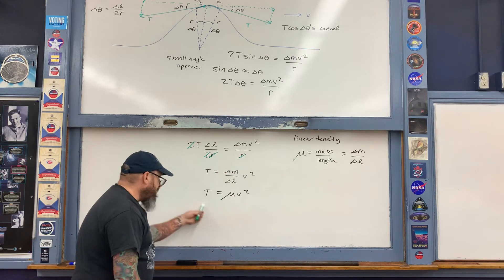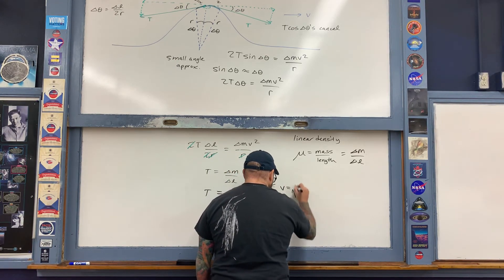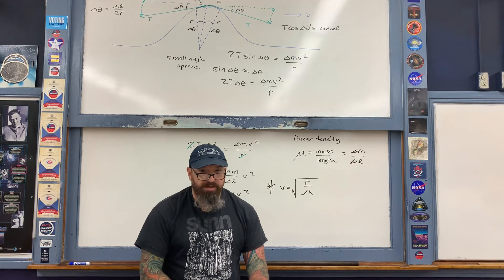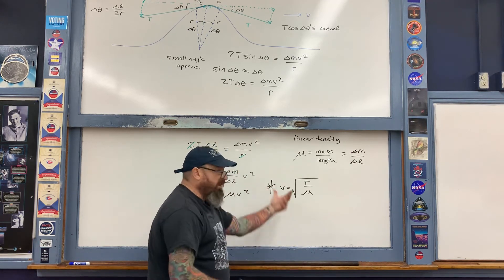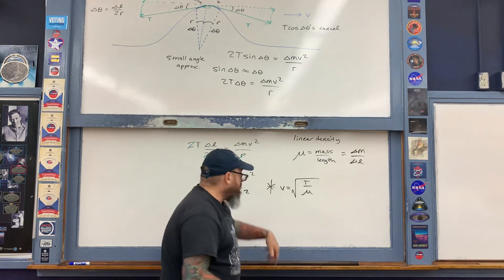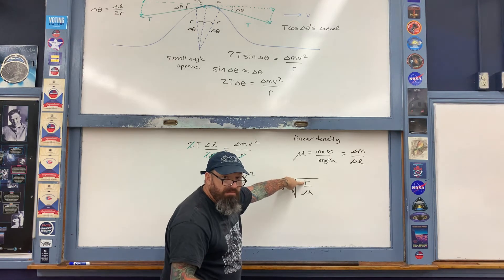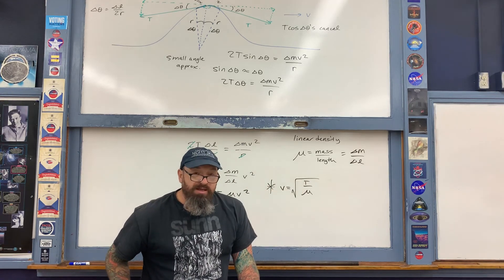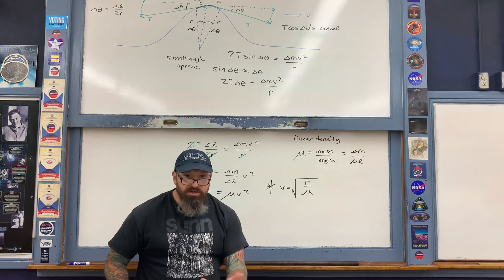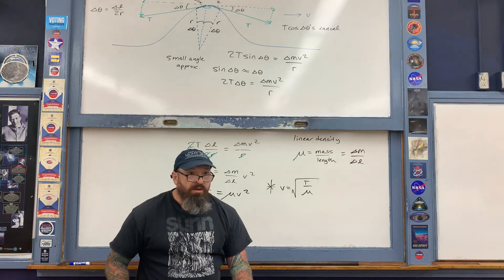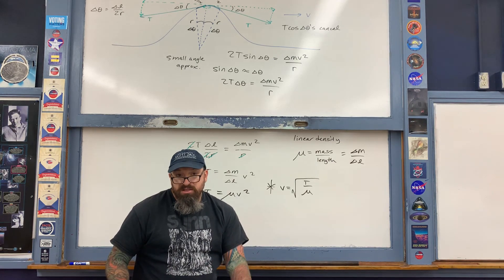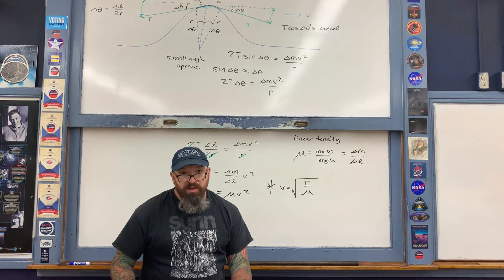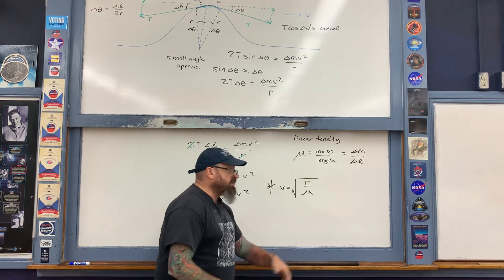Now just solve for the speed: divide by the linear density and take the square root. You end up with v equals the square root of T over mu. In general, when applying F equals ma to the propagation of a mechanical wave, you end up with an expression like this — the square root of something related to the rigidity of the medium (the applied force) divided by a property of the medium itself. When tension applied to the spring is greater, the speed increases. This is the general form for the speed of a mechanical wave.